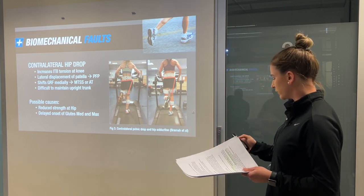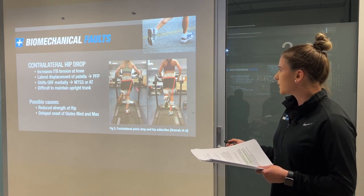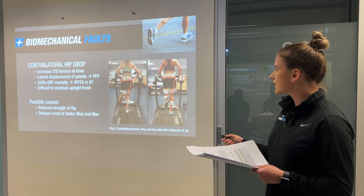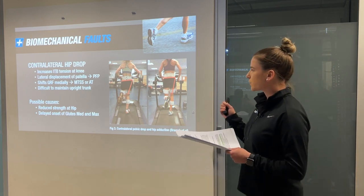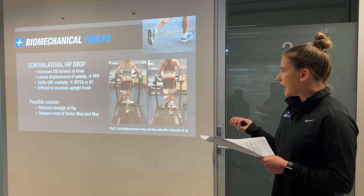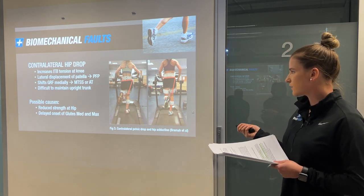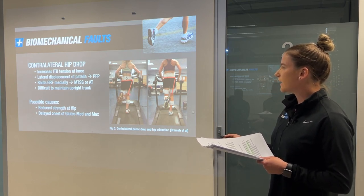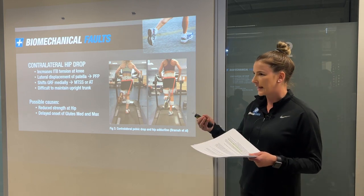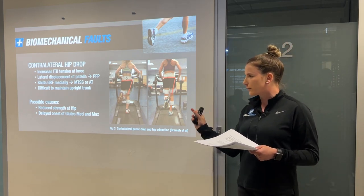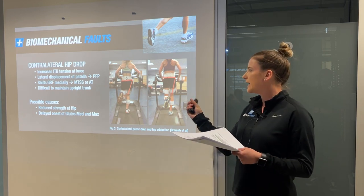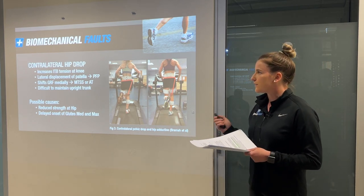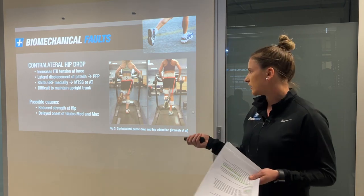The first biomechanical fault is contralateral hip drop. Looking at this lady from behind, you can see with the red markers that the right hip is sitting much higher than the left when she's making impact on the treadmill. This causes increased tension through the IT band, pulling and tracking the patella laterally — the kneecap shifting away from the patellofemoral joint — often presenting as ITB stress syndrome or patellofemoral pain.